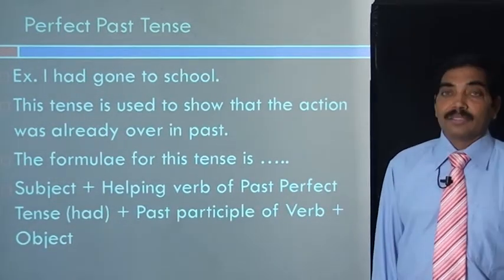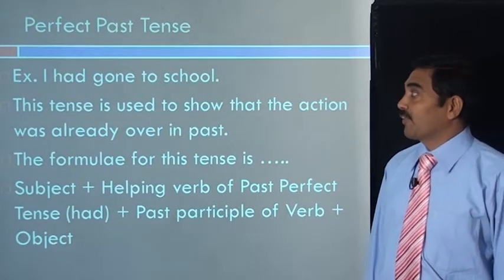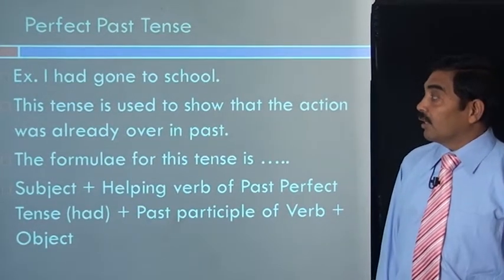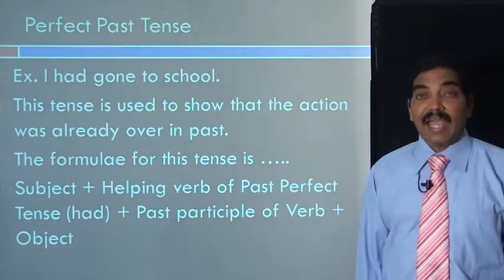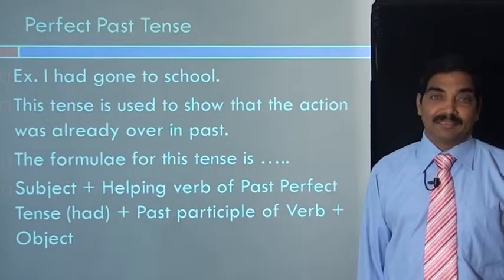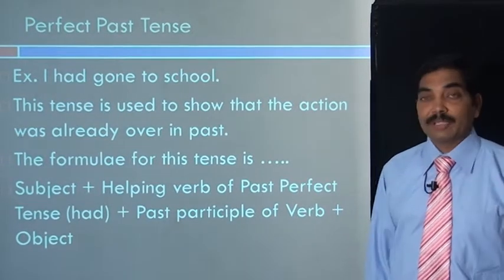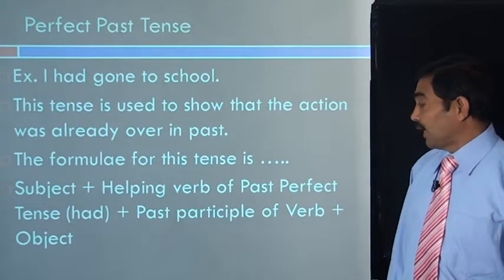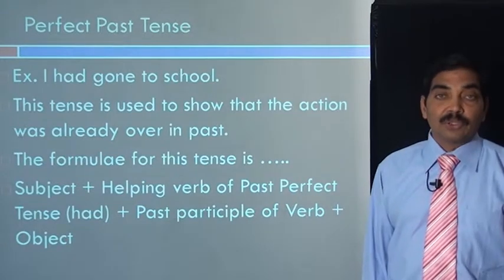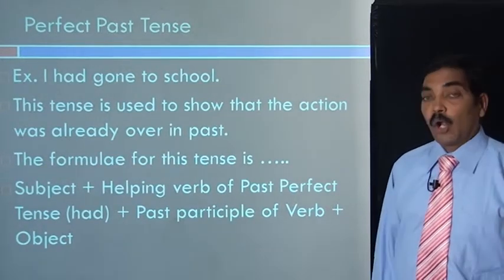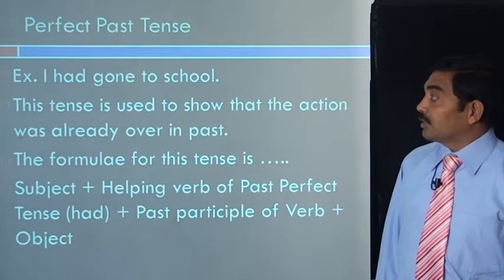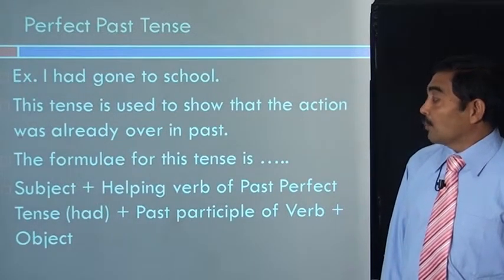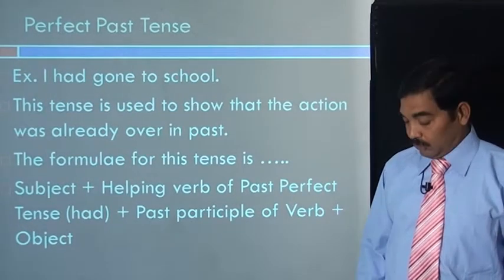Let us go to the seventh form of tense, that is perfect past tense. The example is: I had gone to school. Remember, this tense is used to show that the action was already over in past. The formula for this tense is subject plus helping verb of past perfect tense — that is had — plus past participle of verb, in this case gone (go, went, gone), plus object. The subject is I, had is the helping verb of past perfect tense, gone is the past participle of verb, and object is to school.